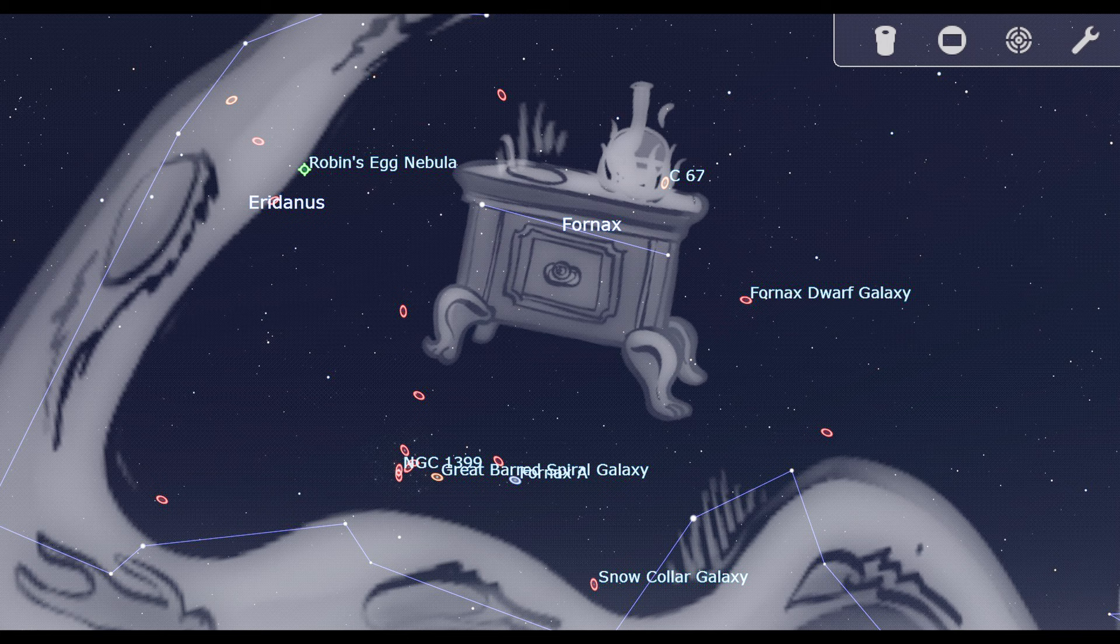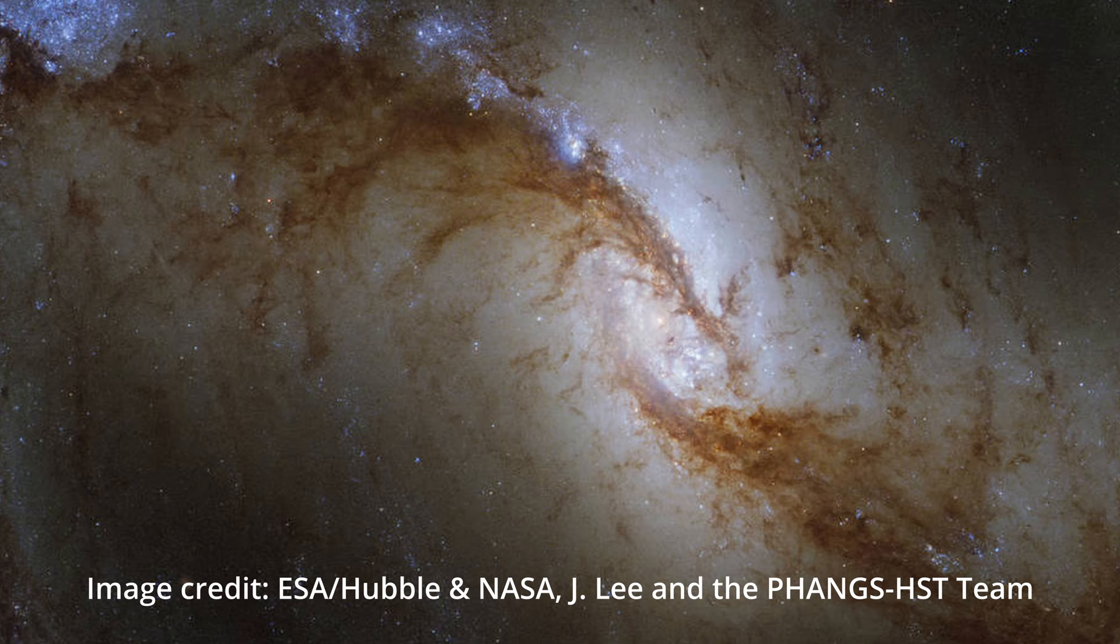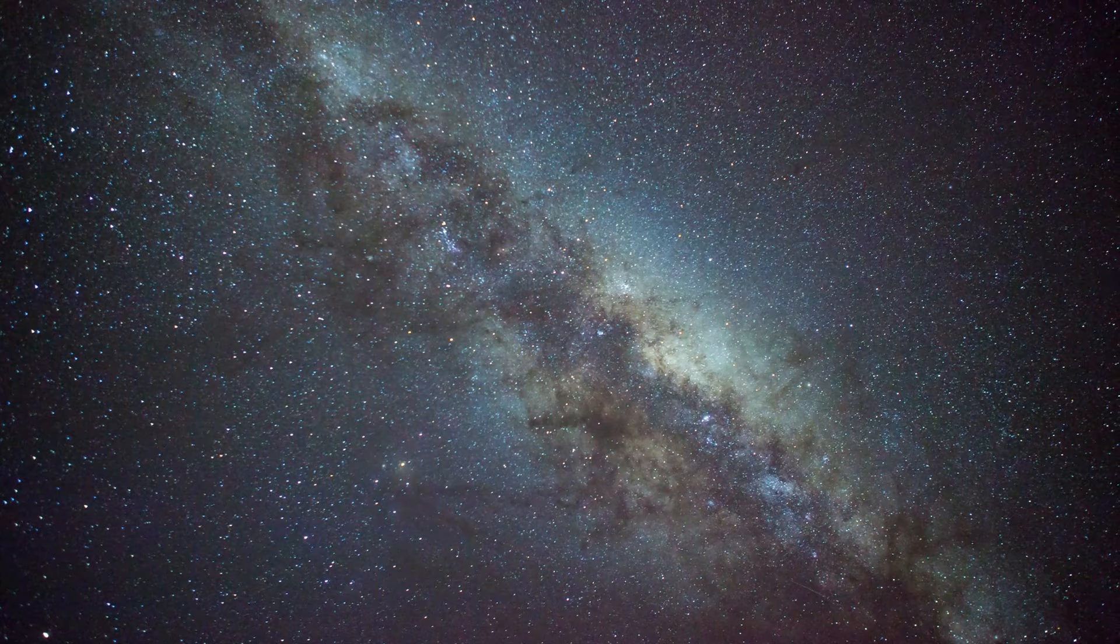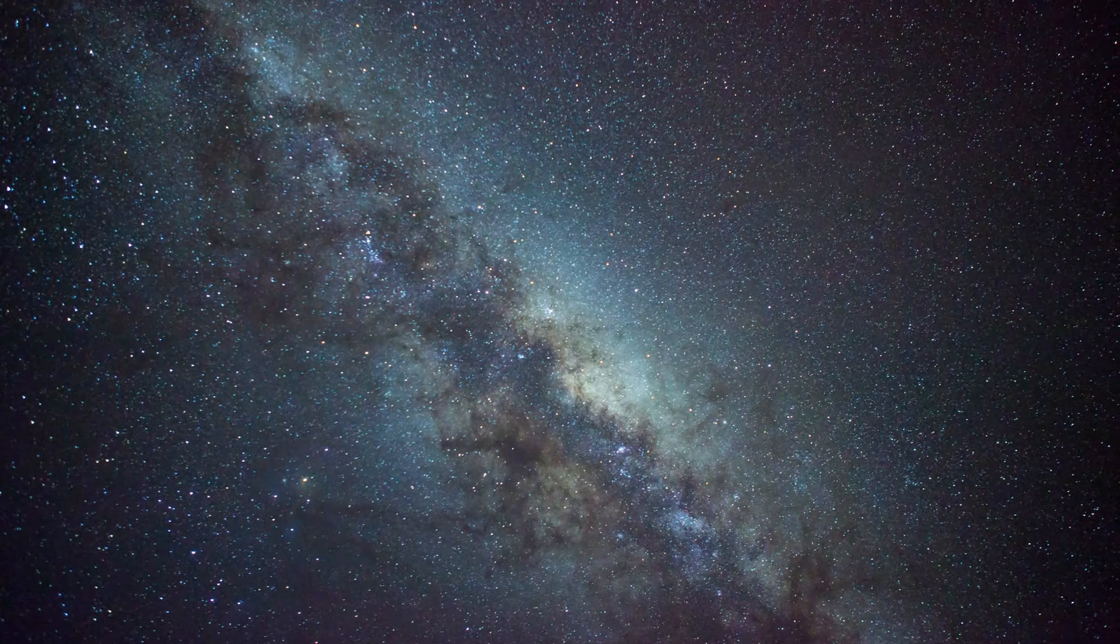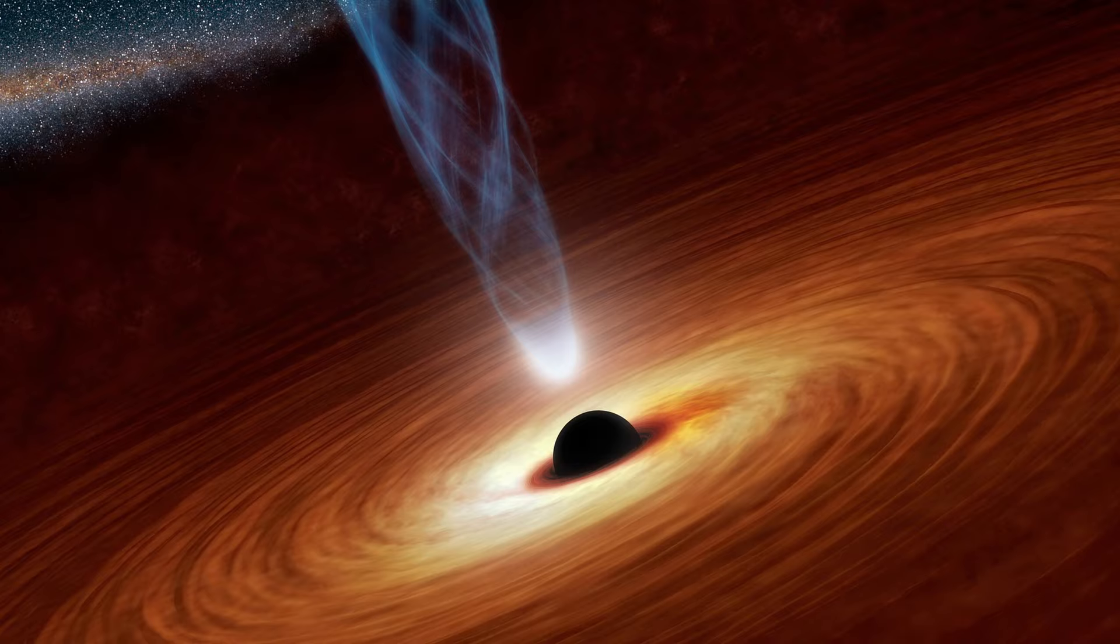60 million light years away from us in the Fornax constellation, there's a huge spiral barred galaxy called NGC 1365, or the Great Barred Spiral Galaxy. Our Milky Way may look very similar to this galaxy, but at half the size. Around the black hole at the center of this galaxy, there's a ring of material which ejects super hot gas.